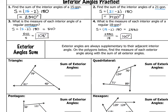So, that's interior angles. Now, we're going to talk about exterior angles. Exterior angles are always supplementary to their adjacent interior angles. We're going to look at four polygons and find the measure of each exterior angle, along with the sum of all of the exterior angles.